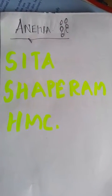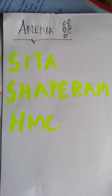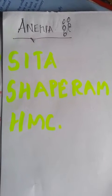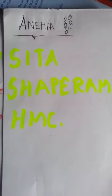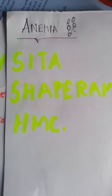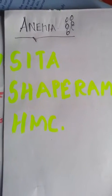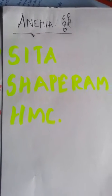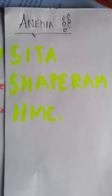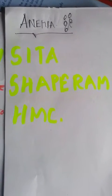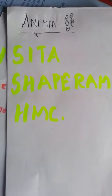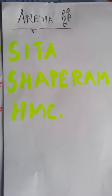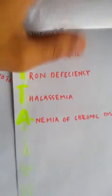I'm going to give a small mnemonic tutorial on anemia — various types of different anemias. The mnemonic is SITA SHAPE RAM HMC. We will expand the various letters.